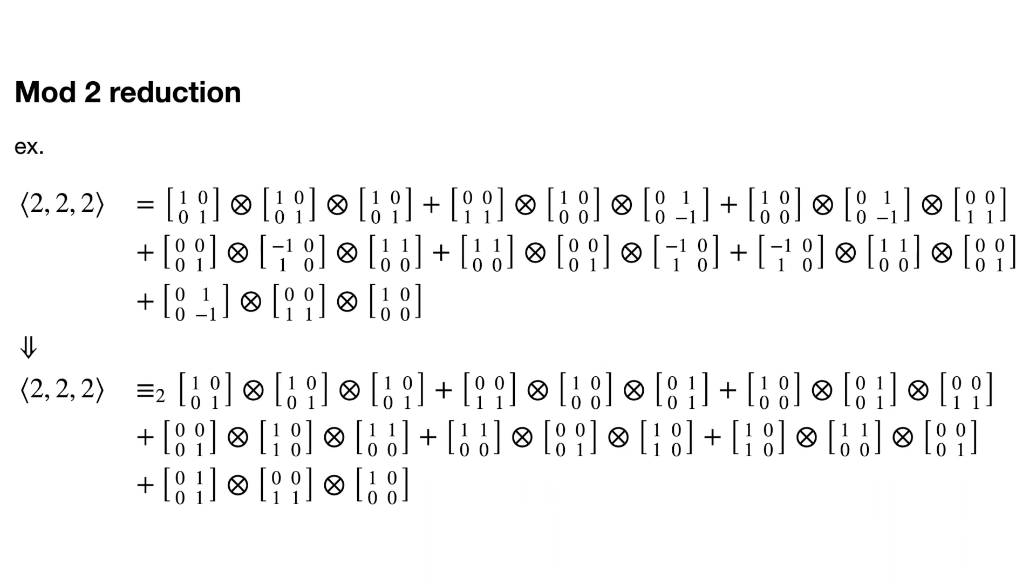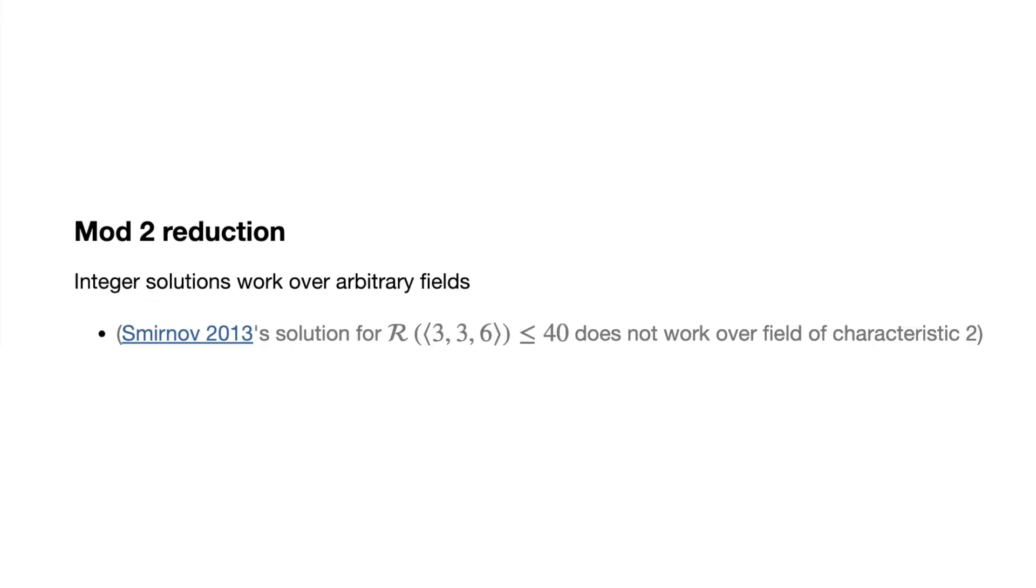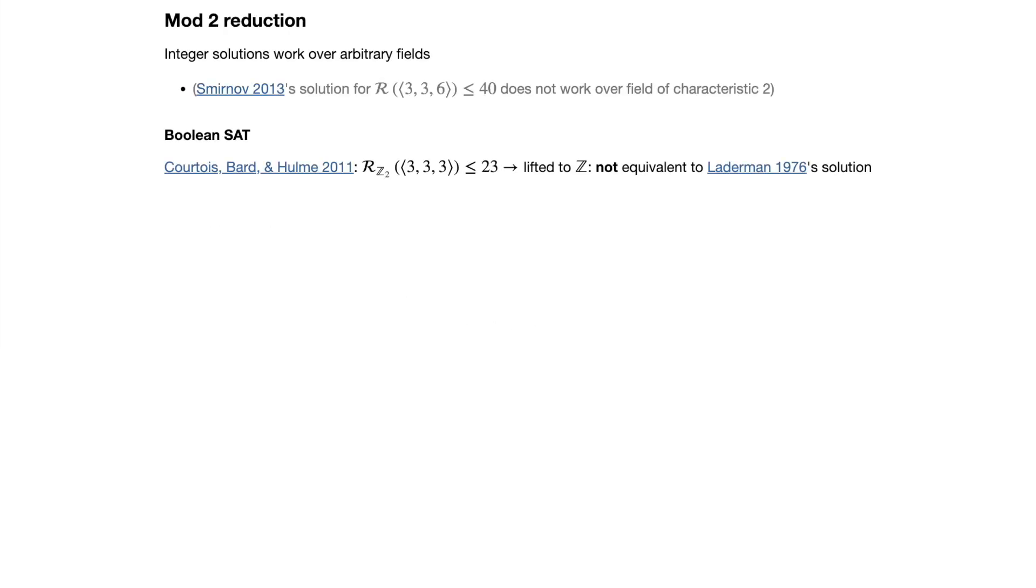Another technique is to only search for decompositions over the integers mod 2, because doing so restricts the search space as much as possible, and it can help narrow down integer solutions, since any integer solution can be converted into an integer mod 2 solution. Integer solutions are the most preferred kinds of solutions, since they work over arbitrary fields. Courtois, Bard, and Hulme found a rank 23 decomposition of the 3×3×3 tensor by using a Boolean satisfiability solver, and were able to lift it to the integers. Hoyle, Kawas, and Seidel found thousands of additional solutions over mod 2, most of which could also be lifted to the integers. However, no one has yet found a rank 22 decomposition.